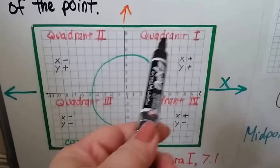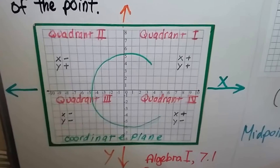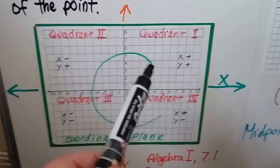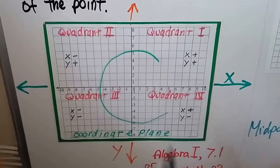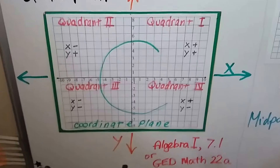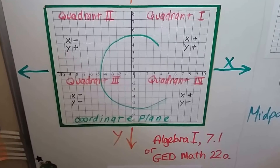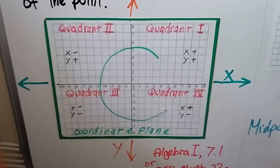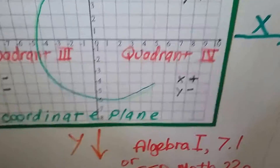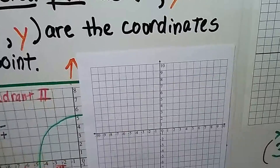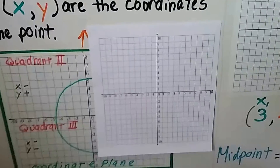There are four quadrants. You know where the quadrants are because coordinate plane starts with the letter C, and the quadrants make the shape of a C — it starts here and wraps around from one to four. You can watch Algebra 1 lesson 7.1 or the GED Math video 22a to learn about coordinate planes. A coordinate plane normally looks like this — it's not this busy.